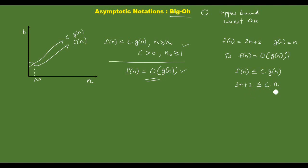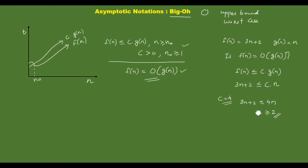The left side should be less than the right side. N is order of G of N — that will be satisfied. Suppose we set c equal to 4: 5 less than or equal to 4 — that does not hold.